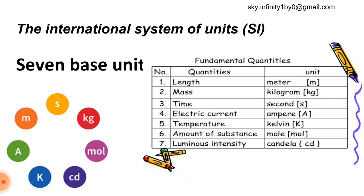The international system of units has given us the seven base units. The seven in number are: meters for length, kilogram for mass, second for time, ampere for electric current, Kelvin for temperature, mole for the amount of substance, and candela for luminous intensity.